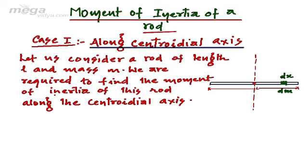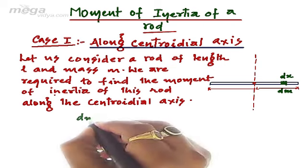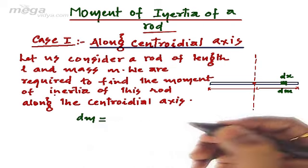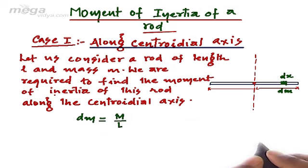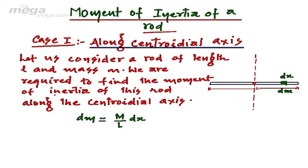First, let us calculate the elementary mass dm. We can calculate the elementary mass using a very simple method. dm can be given as equal to m upon l — that is the mass per unit length — multiplied by dx. Since mass is equally distributed along the rod, we can take dm as m upon l into dx.